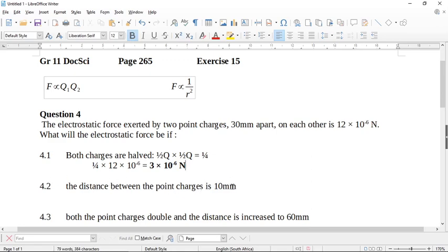Now it says to you the distance between the point charges is 10 mils. So you find the mathematical relationship between 10 mils and 30 mils. So 10 mils is one third. I can't type one third into the computer. So it is one third. 10 mils is one third of 30 mils.